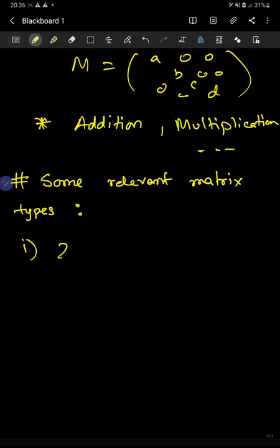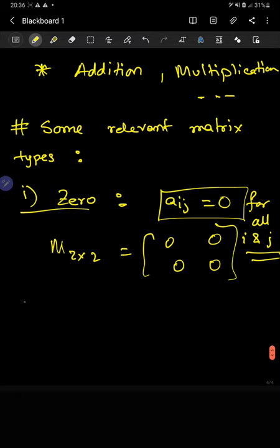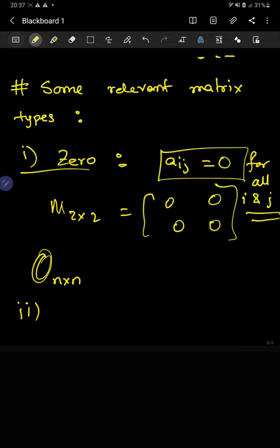First is the zero matrix, which corresponds to aij equal to zero — meaning every element for every row and column is zero. For example, a 2×2 zero matrix looks like this, with aij equal to zero for all i and j. We'll often use this standard symbol to denote the zero matrix, with n cross n to denote its size.